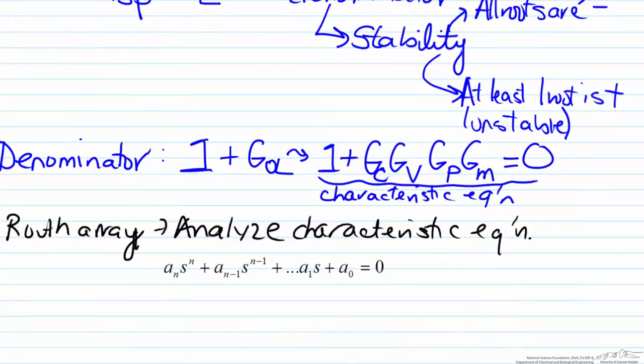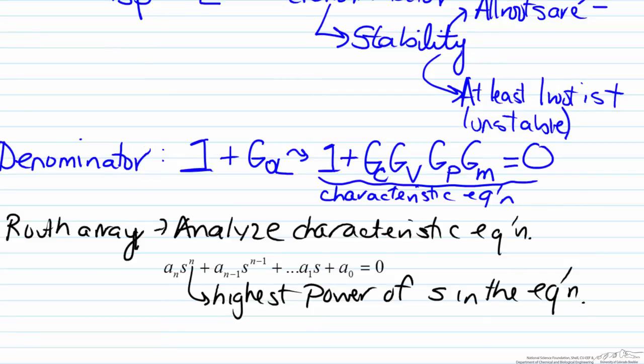In our Routh array analysis we're going to assume that our characteristic equation has the form shown on the screen, where n represents the highest power of s in the equation, and you keep counting down until you reach the first order s term and then the constant, with a_n representing the coefficient of the corresponding power.